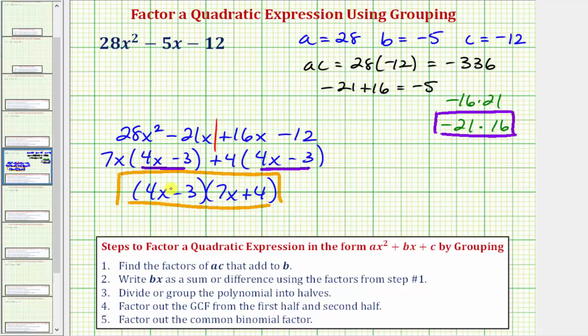Of course, if we want to check this, we can find this product to verify we would get the given quadratic expression. Let's go ahead and show that. We have four x minus three times the quantity seven x plus four. To find this product, we distribute the four x, and then we distribute the negative three.